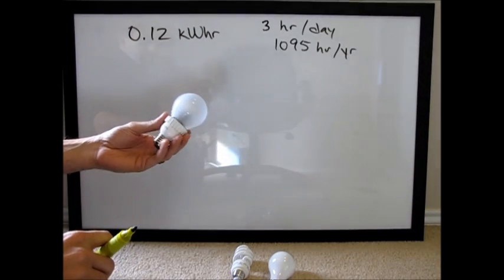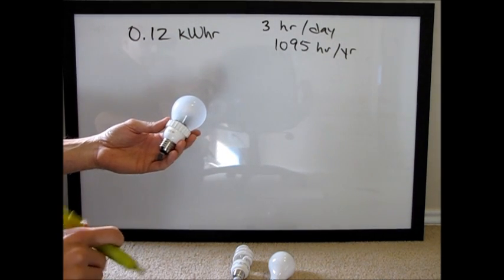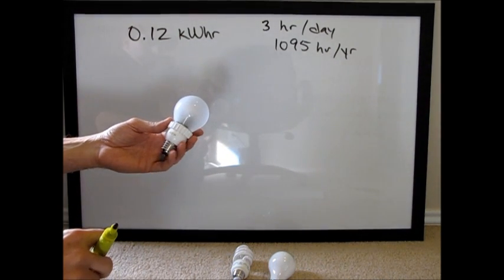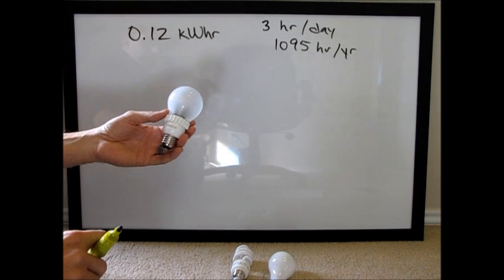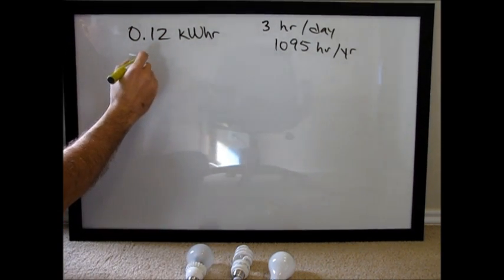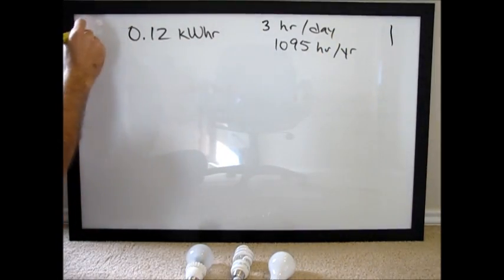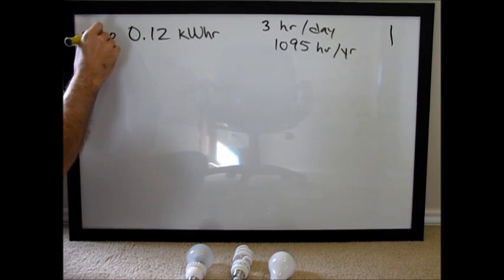This is a Cree light bulb. It's a 60 watt equivalent, uses 9.5 watts of AC power, and it is rated at 22.8 years. So, over here we have one year, over here we have 22.8.